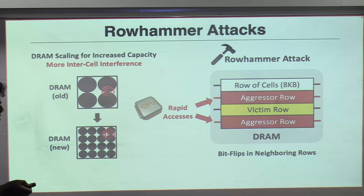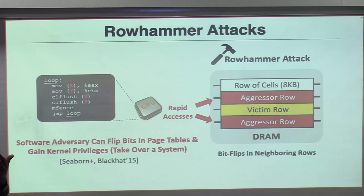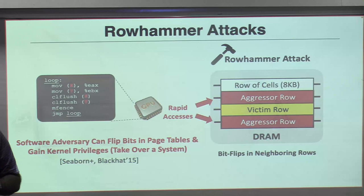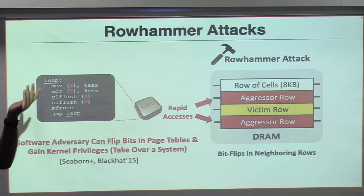Rowhammer was discovered in 2014. You might say, so what if some bits flip? But this is different: a user can cause bit flips in data that the user cannot even access. You've given somebody a very powerful tool to flip bits in an unauthorized region of memory. Think about page tables — as a user, you cannot modify page tables. But if you have a row adjacent to a page table and you access it again and again, you can flip bits in the page table. Page table tells you whether you're a user or kernel. If you flip that bit, you can go from user to kernel and do pretty much whatever you want.